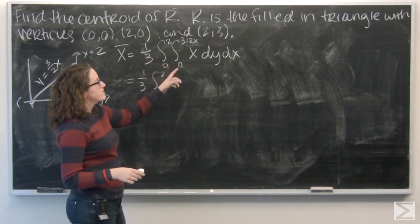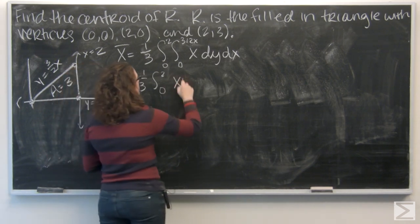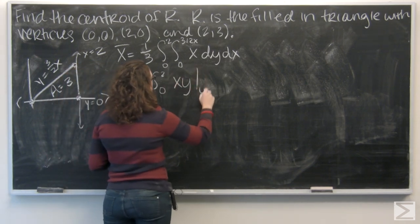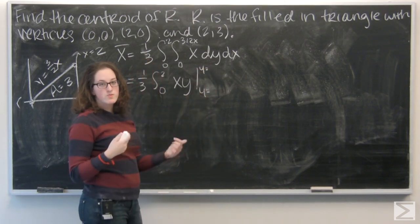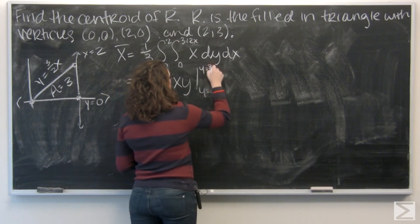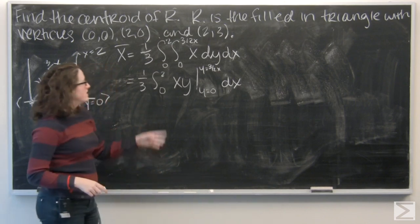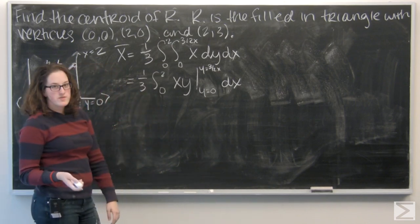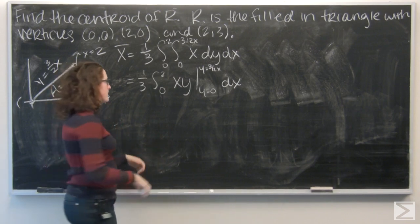So, the integral of x with respect to y is going to be xy. And I want to evaluate that from y equals 0 to y equals 3 halves x. So, let me start by plugging in 3 halves x. 3 halves x times x. 3 halves x squared.